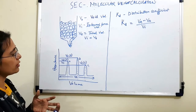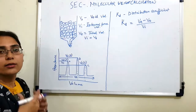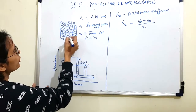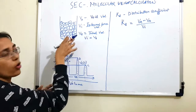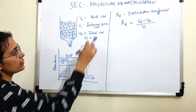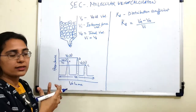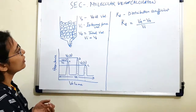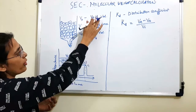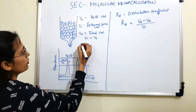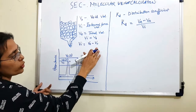Before we move to graph interpretation, let's look at some vocabulary. V0 is the void volume of the column, also the mobile phase volume — it represents the spaces between different beads not occupied by the beads themselves. Vi is the internal pore volume, also called the stationary phase volume, as it represents the volume occupied by the beads. Vt is the total column volume, which is the sum of the void volume and the internal pore volume. From this, Vi = Vt − V0.